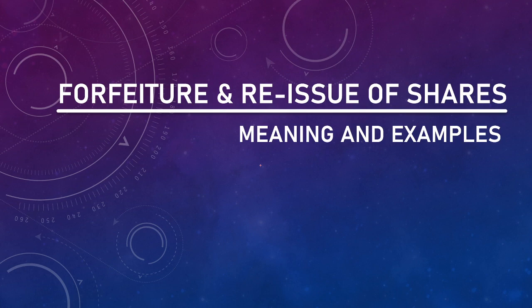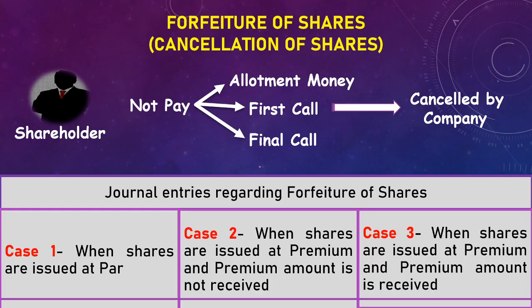First we will understand the meaning of forfeiture of shares. Forfeiture means cancellation of shares. If any shareholder does not pay any installment called by the company — whether it is allotment, first call, or final call — then after giving proper notice to that shareholder, the company has a right to cancel his shares and forfeit the amount which is paid by the shareholder.